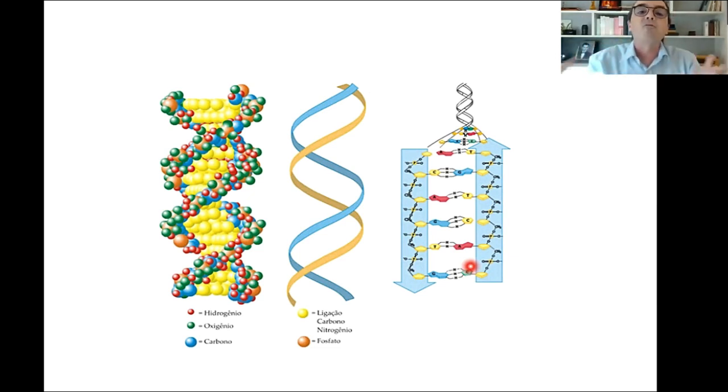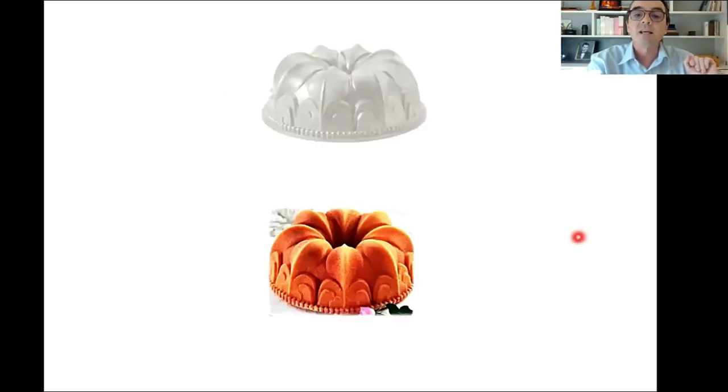E aqui nós vemos diferentes maneiras de representar essa dupla hélice do DNA, seja uma maneira mais realista, como os átomos aparecendo como esferas, seja uma maneira mais estilizada e simplificada. E aqui nós temos então essa estrutura com as estruturas moleculares, relembrando então que são antiparalelas e complementares, sendo que a informação é dada pela sequência dos pares de base ao longo dessa longa molécula. Então relembramos aí como é a famosa dupla hélice de DNA.